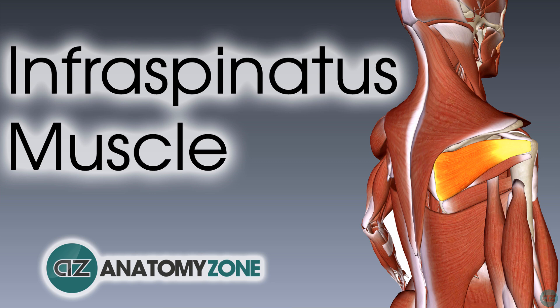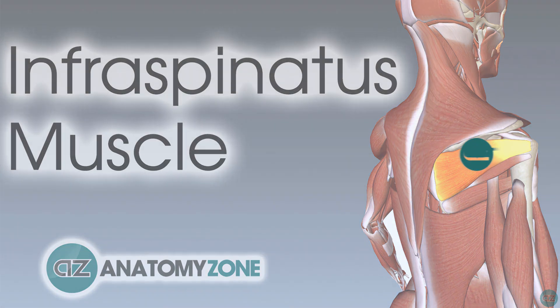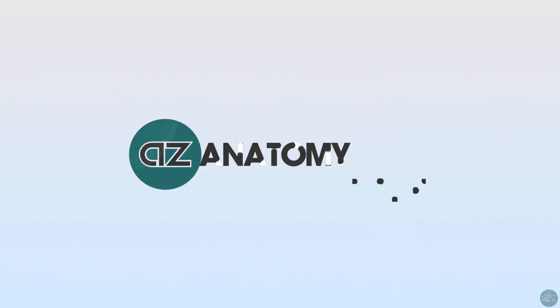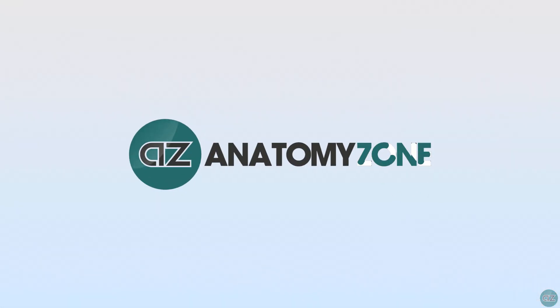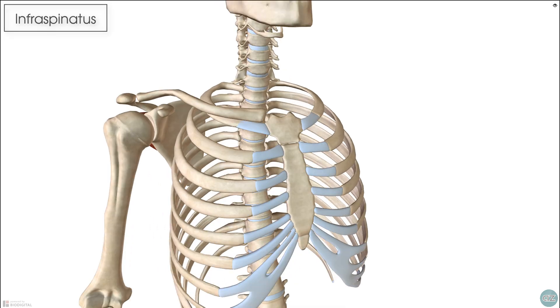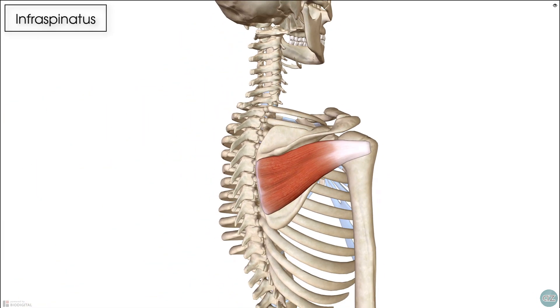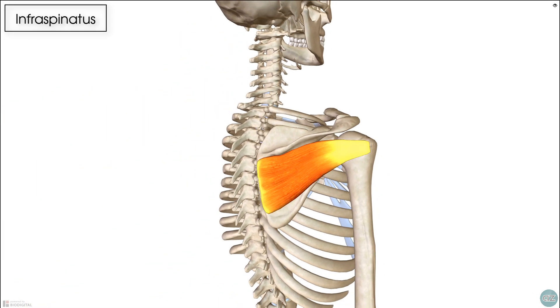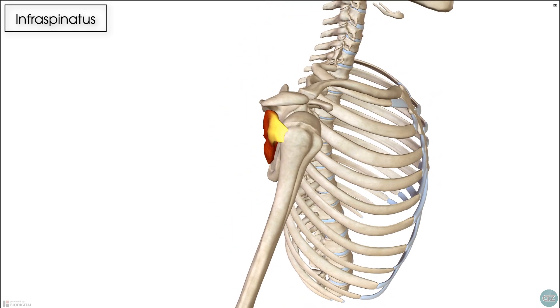Hey, this is Jack at AnatomyZone, and in this tutorial I'm going to take you through the anatomy of the infraspinatus muscle. The infraspinatus is located on the posterior aspect of the scapula, and it forms one of the four rotator cuff muscles.